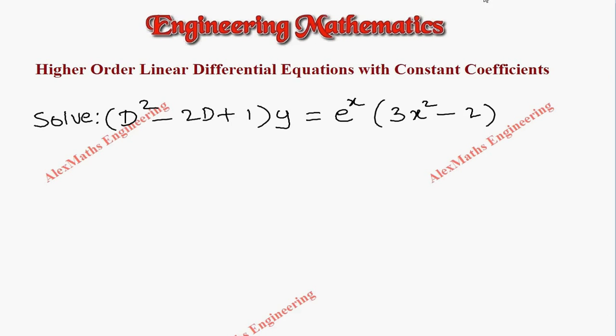Hi students, this is Alex. In this video we are going to discuss a problem. The question is D squared minus 2D plus 1 into y equals e to the power x times 3x squared minus 2.